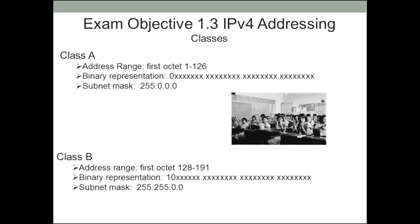With Class A, that first subnet mask being 255 means that is the network portion, and there are 2 to the 8th possibilities of networks — essentially around 16,000. The rest of the digits under the 0.0.0 can be used for individual node addressing — that's a lot of individual nodes. Those were used for extremely large networks. Boeing, for example, was one of the entities that actually purchased a Class A network, and they're probably one of the few still around that needs a network that large.